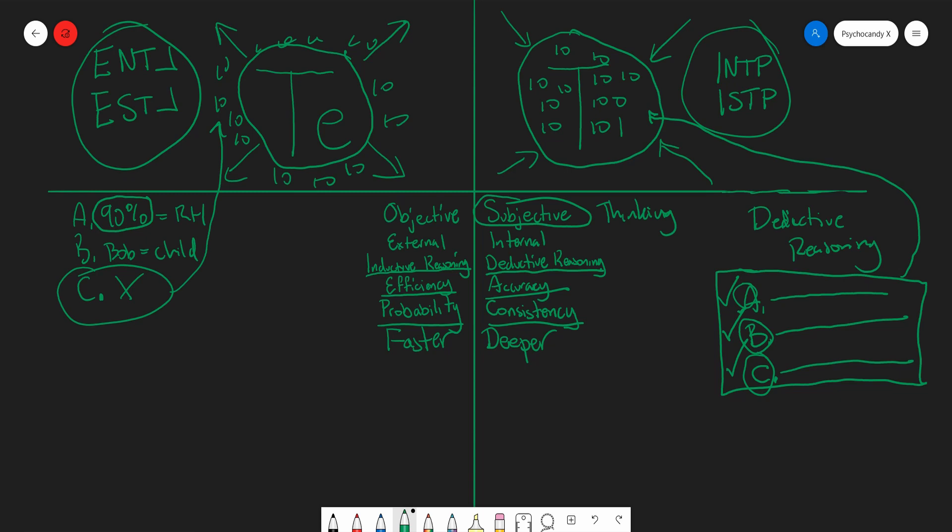As well as with Ti and Ti doms, most likely they will reject this conclusion based on the fact that it is not absolute and it cannot be validated and verified to be true, because there's still a 10% chance that Bob could be left-handed and it does not match this internal framework and ways of processing information.